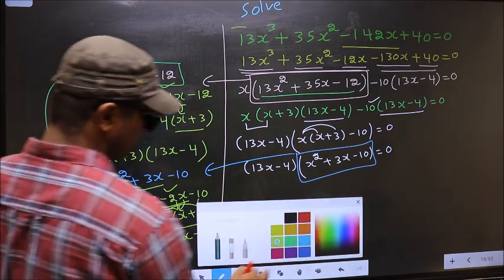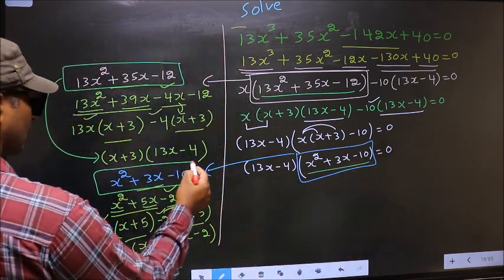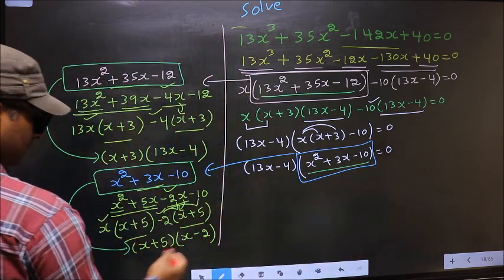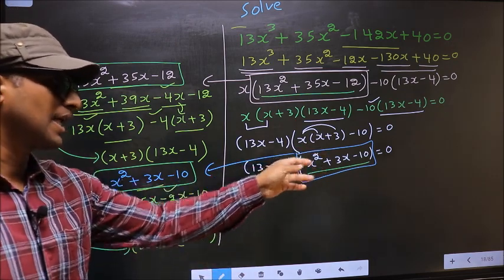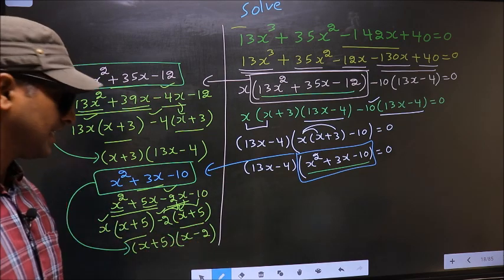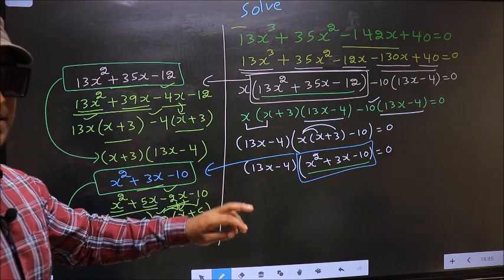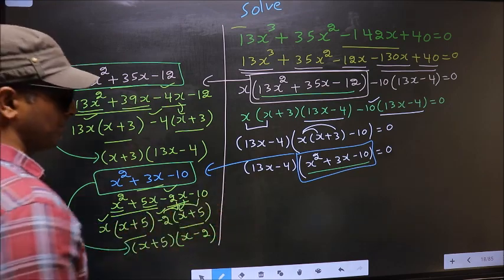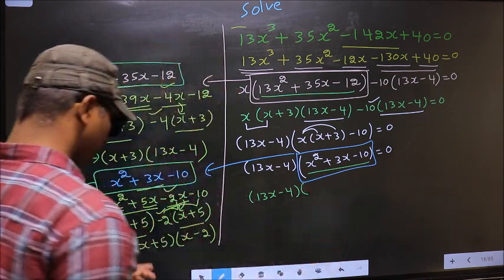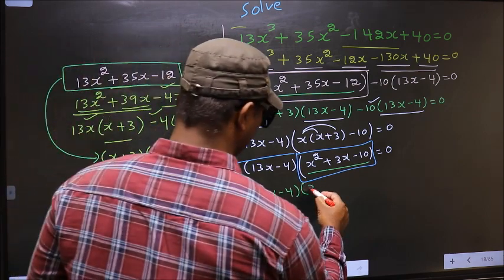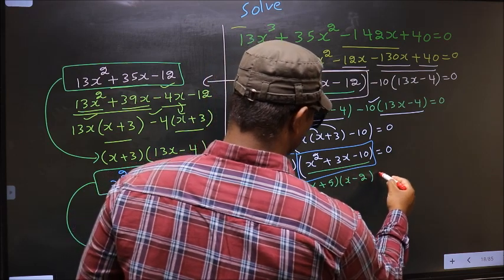In place of this quadratic, now I will write (x + 5)(x - 2). So this equation will change to: (13x - 4)(x + 5)(x - 2) = 0.